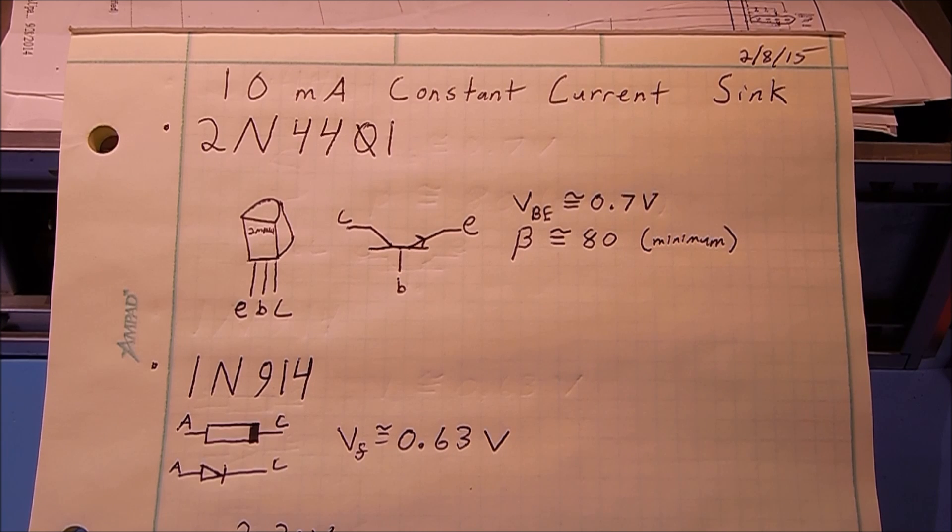I chose a 2N4401 NPN transistor and 1N914 diodes. The important characteristics you need to be aware of are the base to emitter forward voltage of your transistor, in my case about 0.7 volts, and the forward voltage of your diodes, in my case about 0.63 volts.